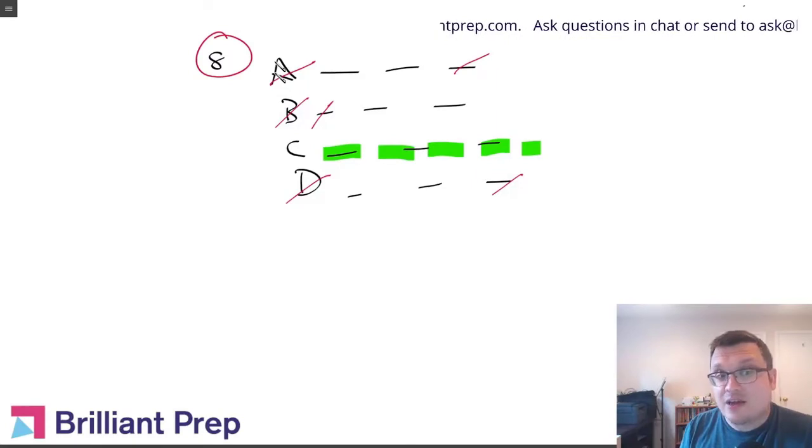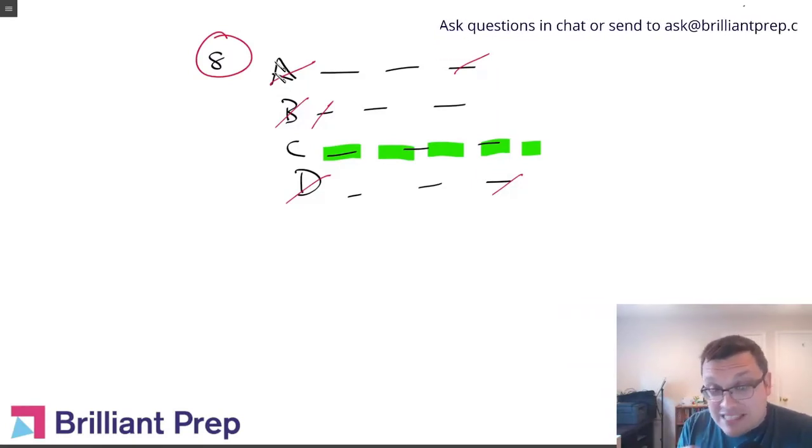And so if you leverage that, if you use that in your testing process to say, okay, which of these choices have mistakes? When I see even a tiny mistake, the whole choice is out, narrow down to the right answer.